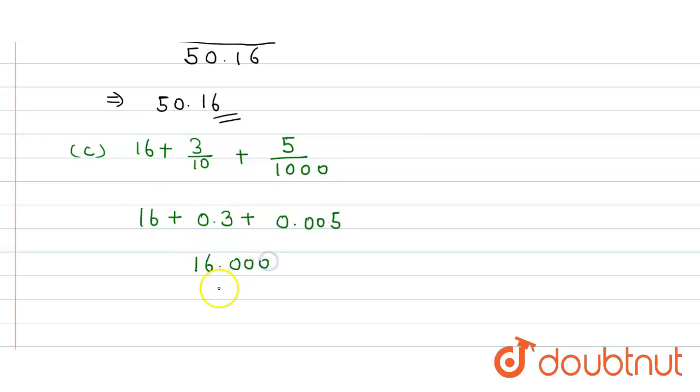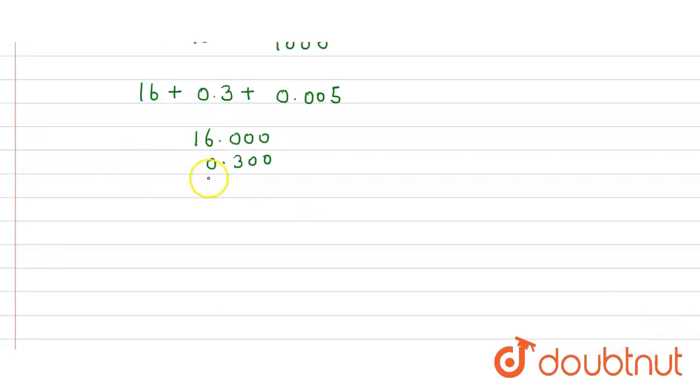So here it is like 16.300 and then again 0.005. So here we get 5 and here 0 plus 0 plus 0 is 0 and here it is 3, 1, 6. So here we get answer to be 16.305 and here that's our answer.